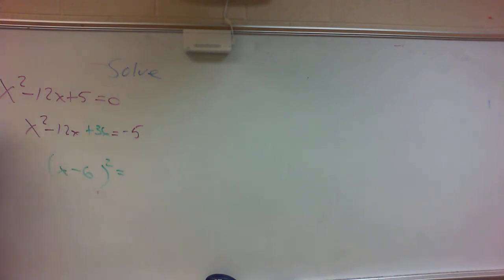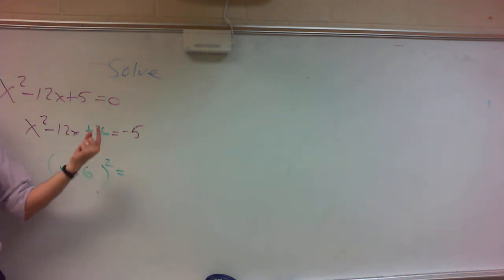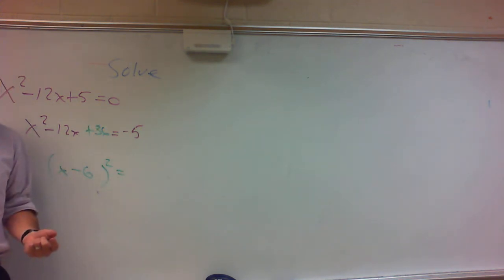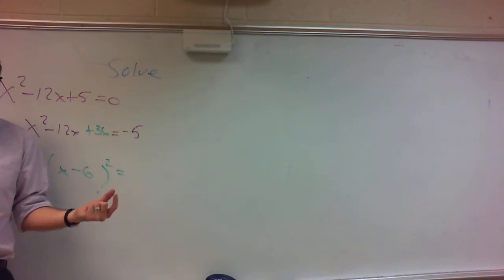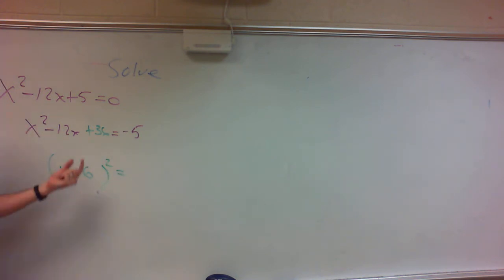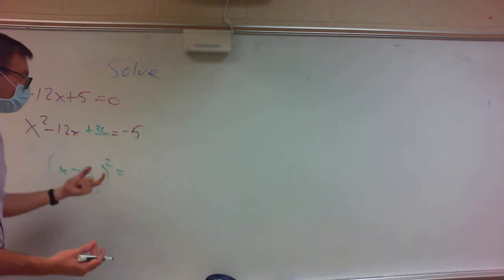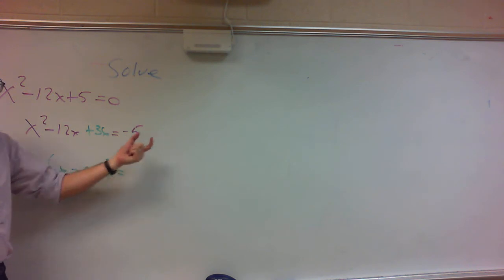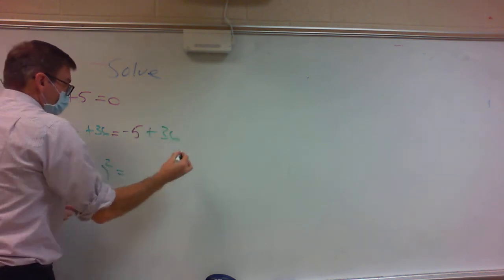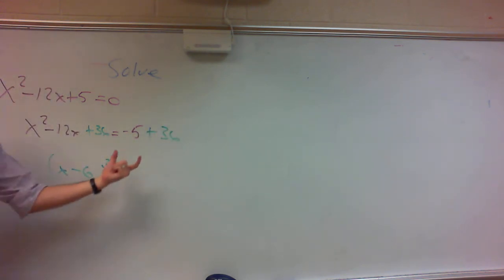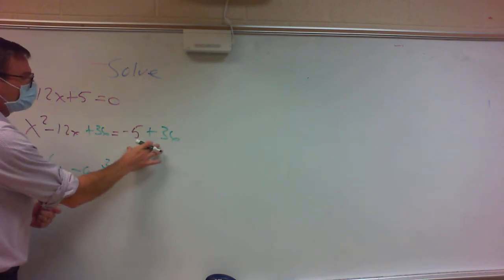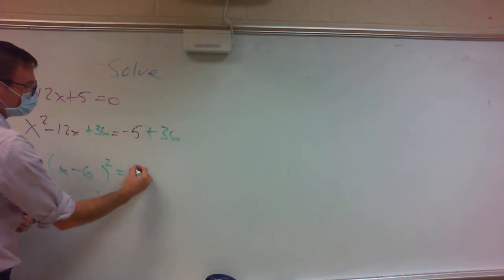I've changed the problem — I've added 36 to one side of the equation. You can't just add 36 to one side without adding it to the other. Whatever you do to one side of the equation, you have to do to the other. So I'm going to add 36 to this side too. That gives me negative 5 plus 36, which is 31.